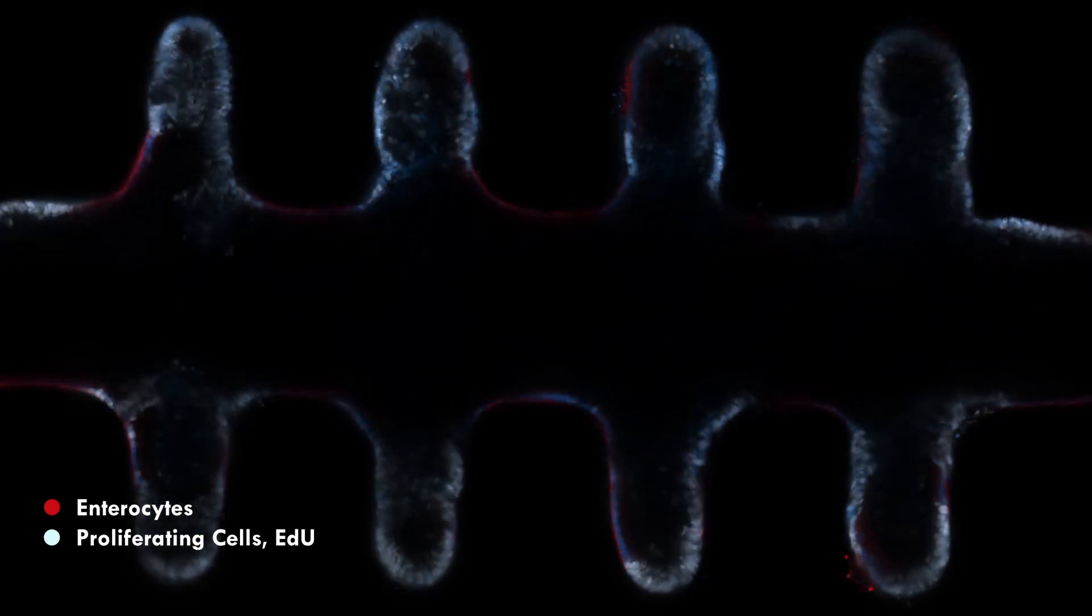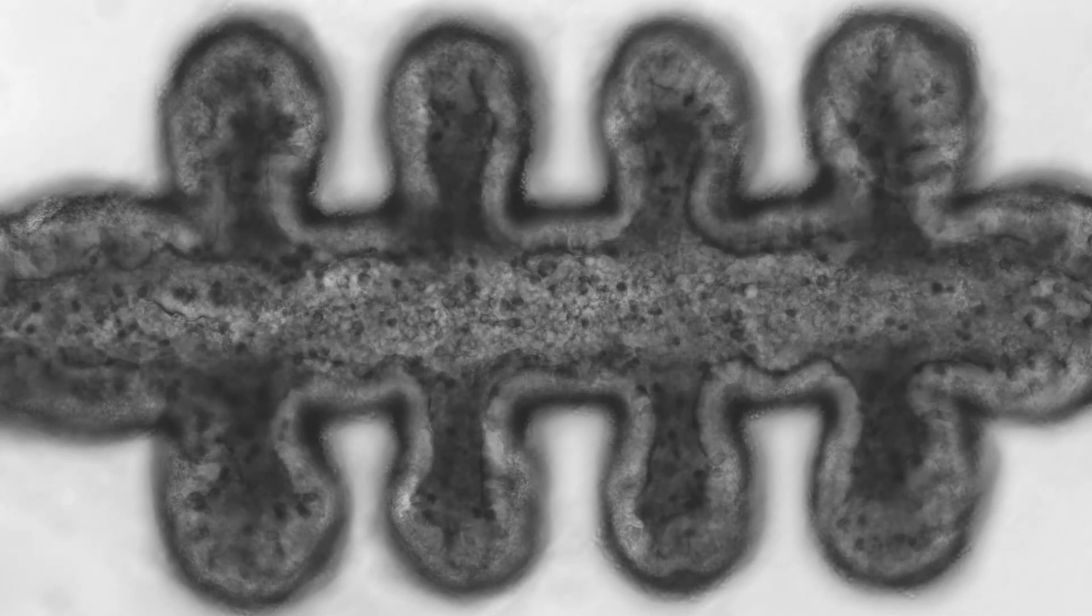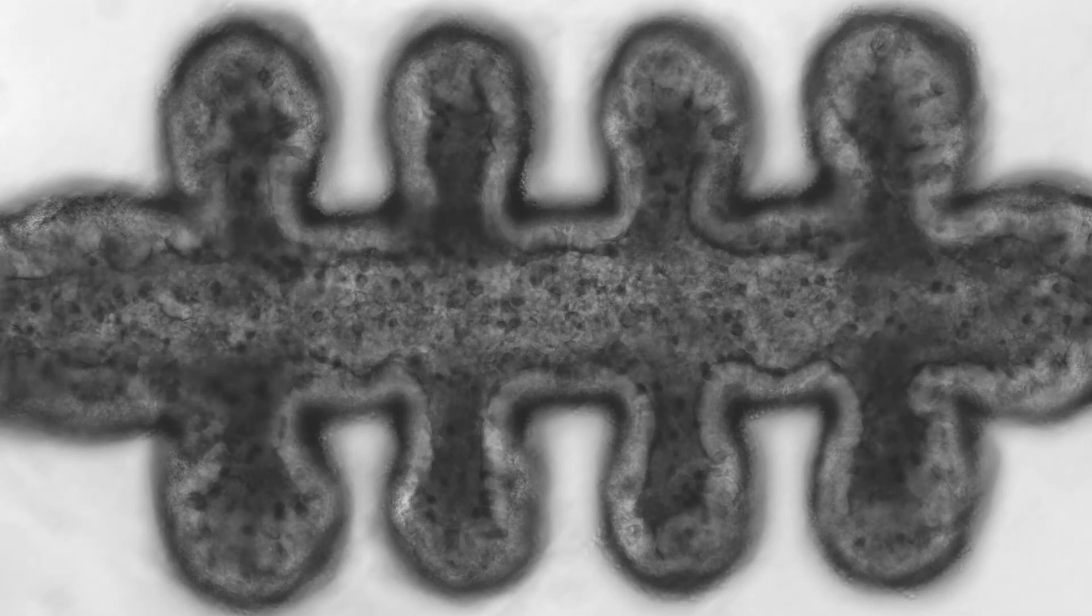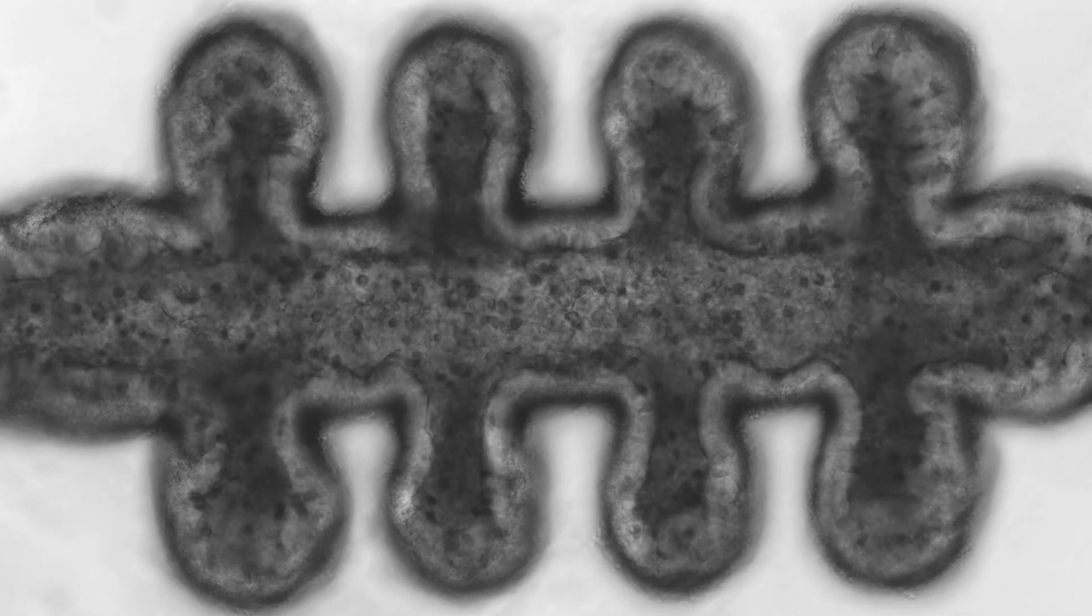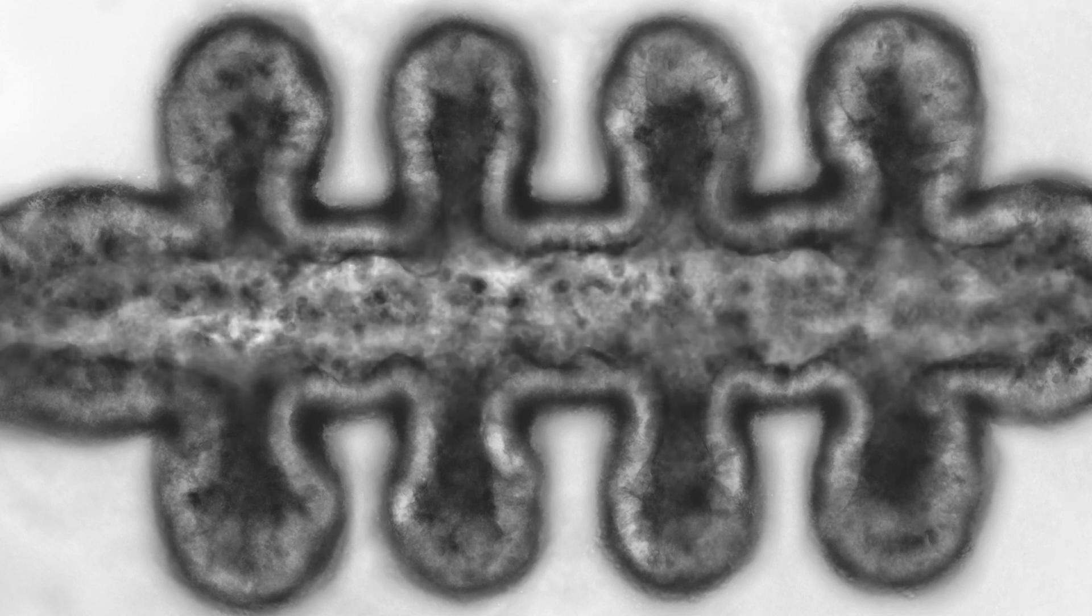Intestinal epithelium is the fastest renewing tissue in the human body, resulting in continuous accumulation of shed cells in the lumen. The microfluidic perfusion system allows the efficient removal of dying cells and can expose these tissues to microbiota, parasites or viruses that can colonize the intestine.